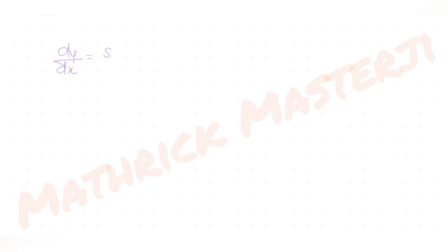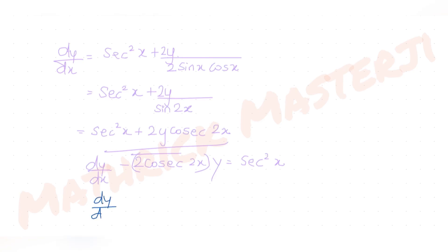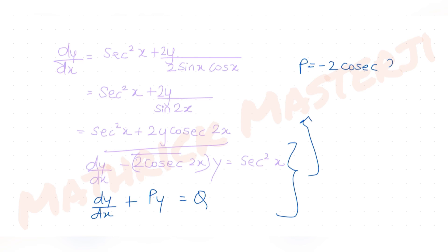Multiplying the y-term's denominator and numerator by 2: sin x · cos x = sin(2x)/2, so y / (sin x · cos x) = 2y / sin(2x) = 2y · cosec(2x). Rearranging to the standard linear form dy/dx − 2 cosec(2x) · y = sec²x. Comparing with dy/dx + Py = Q, we get P = −2 cosec(2x) and Q = sec²x.